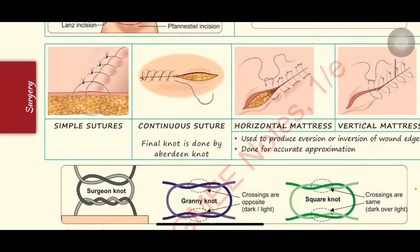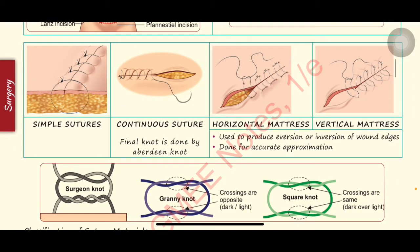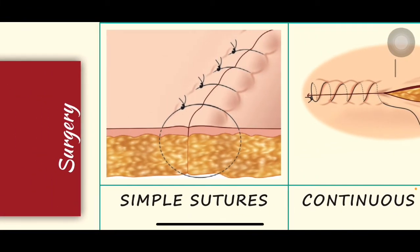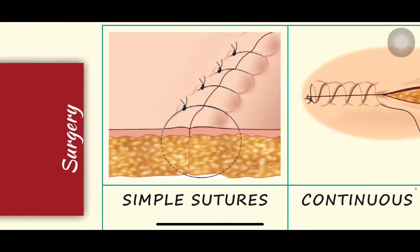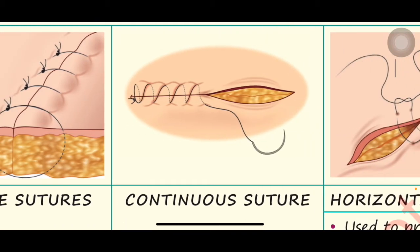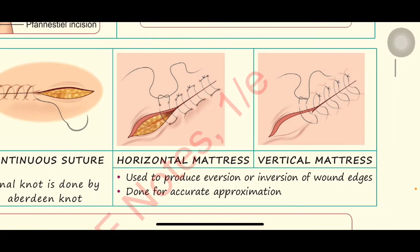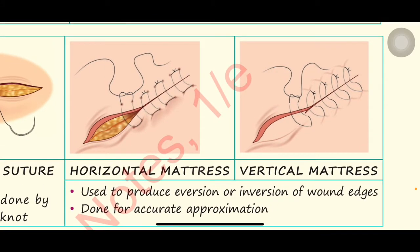Coming to the types of sutures — these image-based questions about types of sutures are asked many times in PG exams. First is simple sutures — these are individual sutures. Next is continuous suture. Next are mattress sutures, of which there are two types: horizontal mattress and vertical mattress. These are used to produce eversion and inversion of wound edges and are done for accurate approximation.